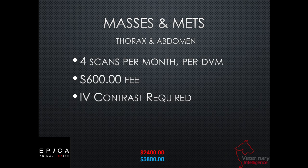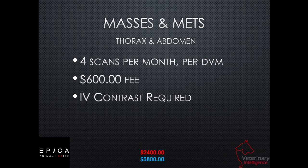Masses and mets are very common with the Vimigo — about the same frequency as orthopedics, but we'll see more masses and mets across the board no matter what kind of practice you're running. In the small animal world, a lot of Vimigo users are sending Peregrine Radiology cases with masses and mets in the thorax and abdomen. That's about four scans per month per associate DVM at a $600 fee. IV contrast is required on all of these and is charged separately because it's dosage-dependent — a Chihuahua won't take nearly as much contrast as a Labrador Retriever.